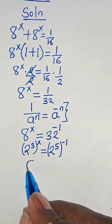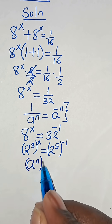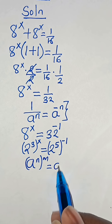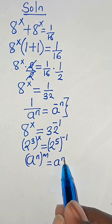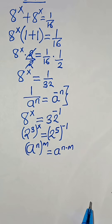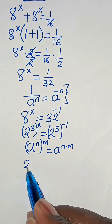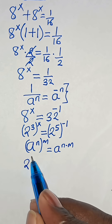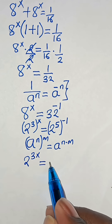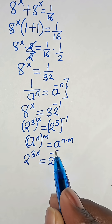This is in the form of 8 to the power of n raised to the power of m, which we can express as 8 to the power of n multiplied by m. Applying this property, we have 2 to the power of 3x equals 2 to the power of minus 5.